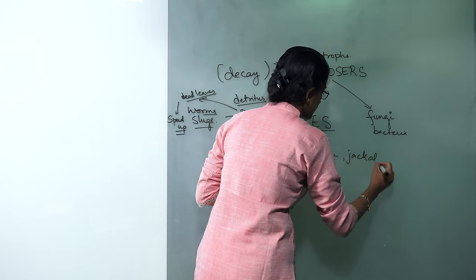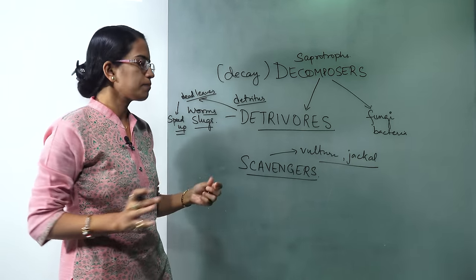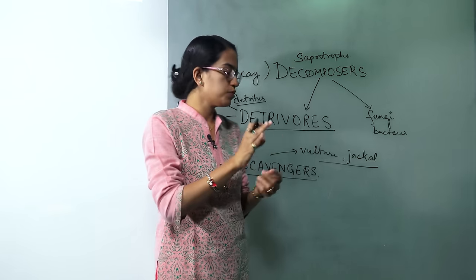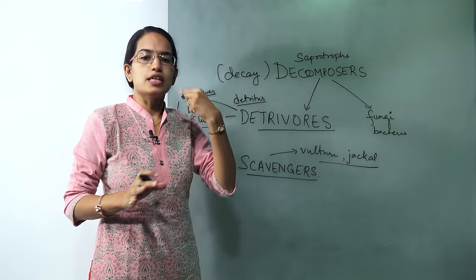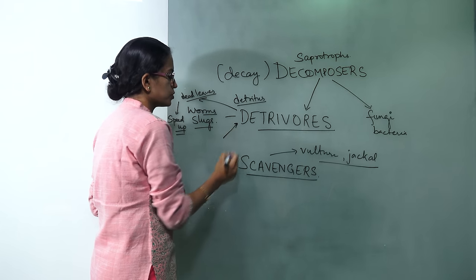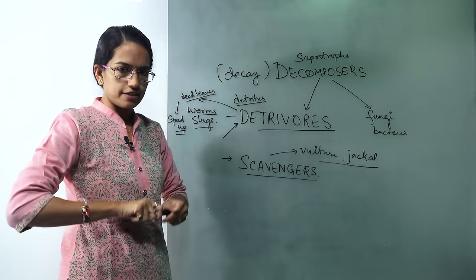So all these scavengers basically consume bigger quantities of organic matter. When organic matter is consumed by the scavengers, the leftover dead decaying material is then consumed by the detrivores. So that's the basic difference between scavengers and detrivores.